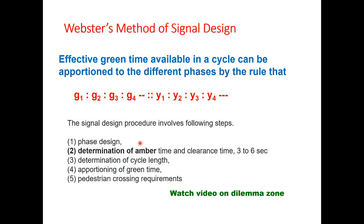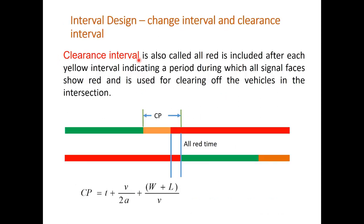The procedure for signal design is reduced to five steps. First is phase design — you decide the number of phases. The simplest design has two phases; you can add a phase for right-turning traffic from one or all directions (three or four phase), or add a phase for pedestrians. Second is determination of amber time and clearance time, which is three to six seconds. Then we find cycle length using the Webster equation and apportion green time. Pedestrian crossing requirements can also be considered with a separate phase.